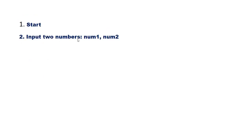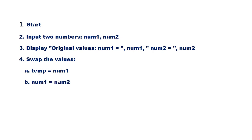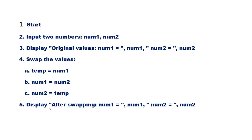Start. Input two numbers num1 and num2. Display the original values of num1 and num2. For swapping, we take a third variable called temp. Set temp equal to num1, num1 equal to num2, num2 equal to temp. Now display the values after swapping: num1 and num2.